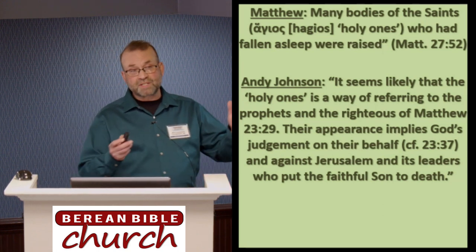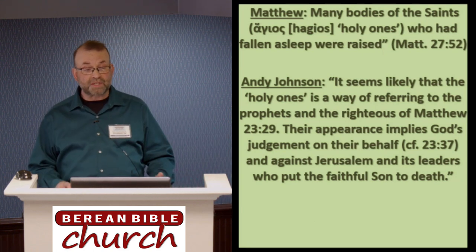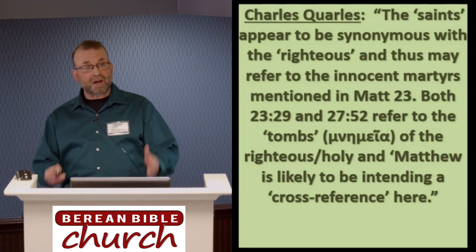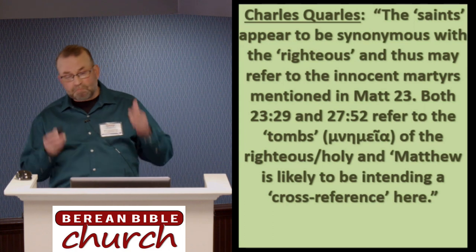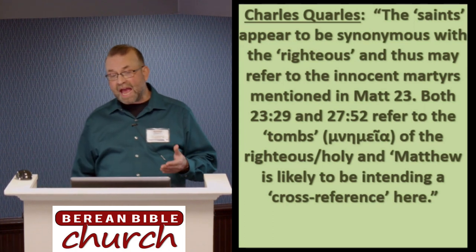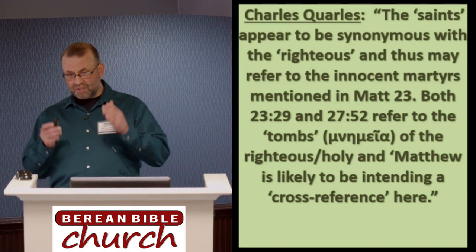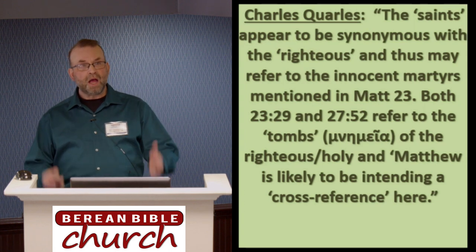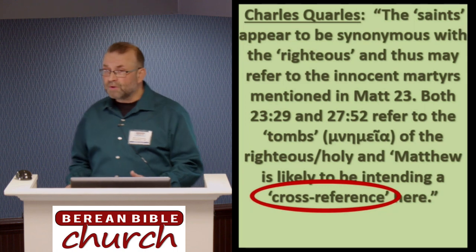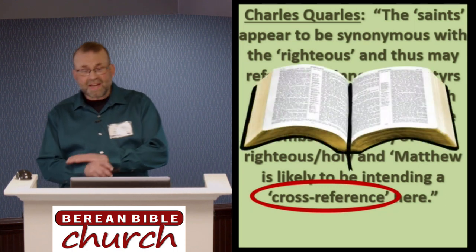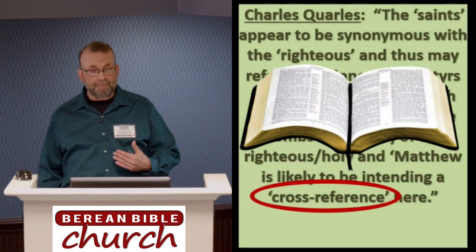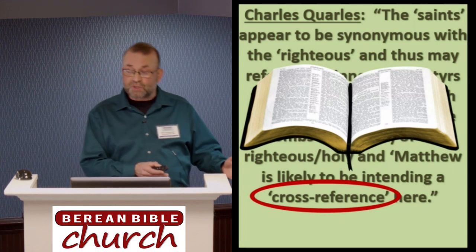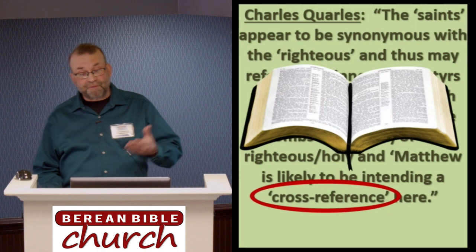Their appearance implies God's judgment on their behalf and against Jerusalem and its leaders who put the faithful Son to death. Likewise, Charles Corliss writes: the saints appear to be synonymous with the righteous and thus may refer to the innocent martyrs mentioned in Matthew 23. He adds that both 23:29 and 27:52 refer to the tombs of the righteous or holy and Matthew is likely intending a cross reference here. I like the word he uses — cross reference. Remember, they didn't have marginal reference Bibles like we do today. There were no chapter and verse divisions, and Matthew couldn't put a little A or B next to 27:52 telling you to go back to chapter 23 to find out who he's talking about.